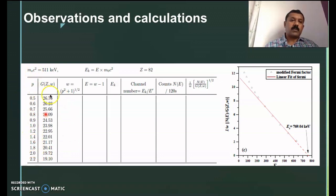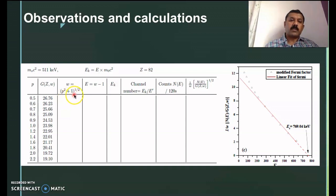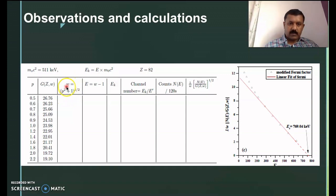These are the momentum values and this is the Fermi function. From this Fermi function, calculate the modified Fermi function. You can calculate energy ω through the relation ω = √(p² + 1). So you have the momentum values p; compute √(p² + 1) to get ω. Then calculate kinetic energy as E = ω − 1.